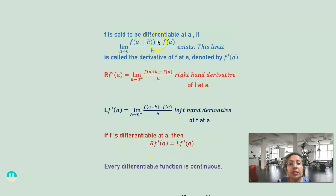What about differentiability? f is said to be differentiable at a if its limit as h tending to 0 of [f(a+h) minus f(a)] divided by h exists. This limit is called the derivative of f at a, denoted by f'(a).